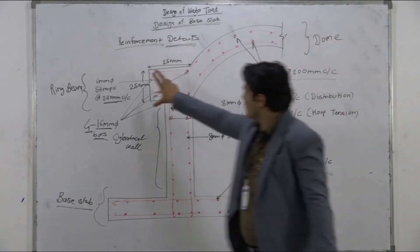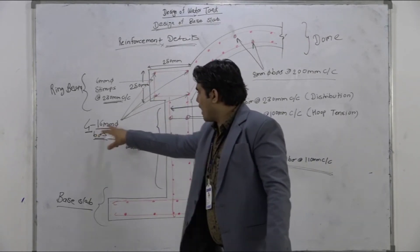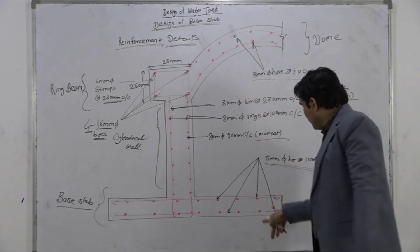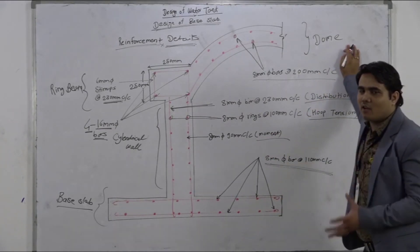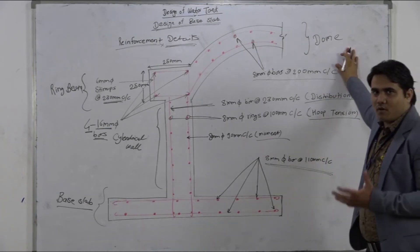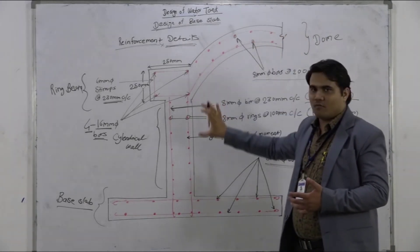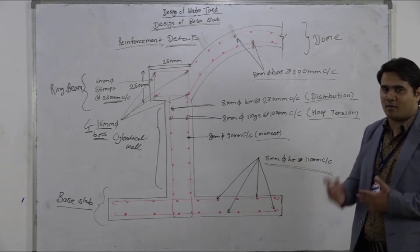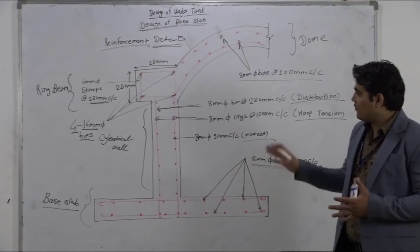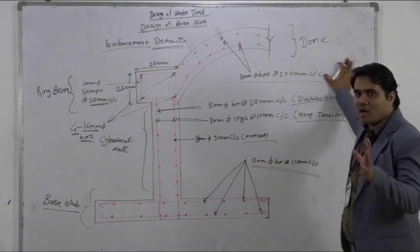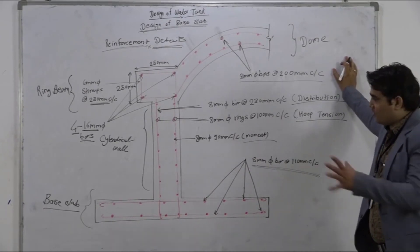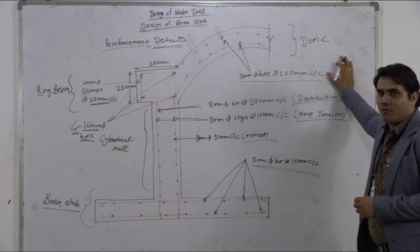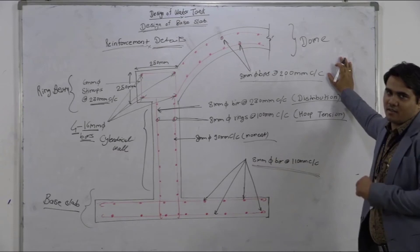To summarize: the dome portion has 8 mm bars, the ring beam has 4 bars of 16 mm and 6 mm stirrups, the cylindrical walls have bars for distribution, hoop tension, and moment, and finally the base slab. This is the complete detailed design of a circular water tank — consisting of the top roof dome, ring beam, walls, and base slab. We have included all stresses, designed the sections, assumed and verified the number of bars, covered spacing, and distributed all reinforcement. Please ensure the neatness and cleanliness of this diagram in the examination — it is crucial to attain full marks. Thank you very much.